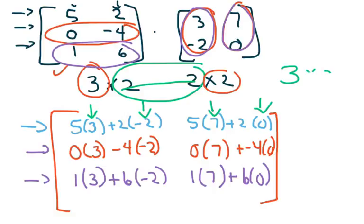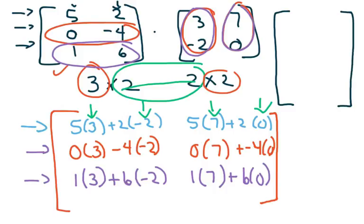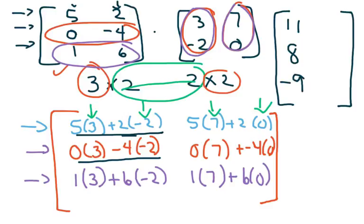Working these out mentally: 15 minus 2 is 13 — wait, 15 minus 4 gives 11; 35 plus 0 is 35. Then 0 plus 8 is 8; 0 plus 0 is 0. Then 3 minus 12 is negative 9; 7 plus 0 is 7. So the final 3×2 result is [11, 35; 8, 0; negative 9, 7]. And that's how you do matrix multiplication.